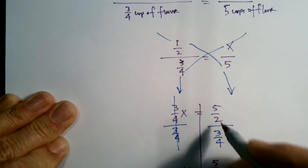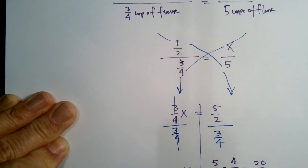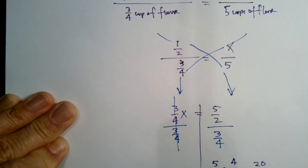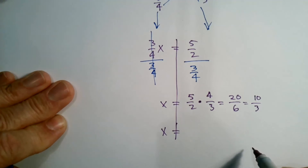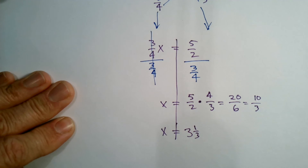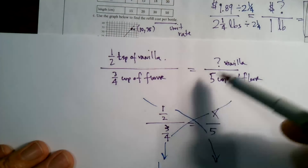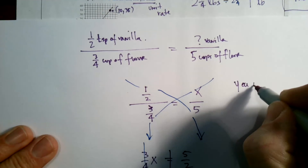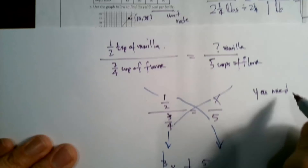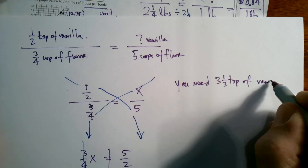X equals five halves divided by three fourths. For division of fractions, I keep the first, then invert and multiply. So five halves times four thirds gives me 20 over 6, which simplifies to ten thirds, or three and one third. So you need three and one third teaspoons of vanilla for five cups of flour.